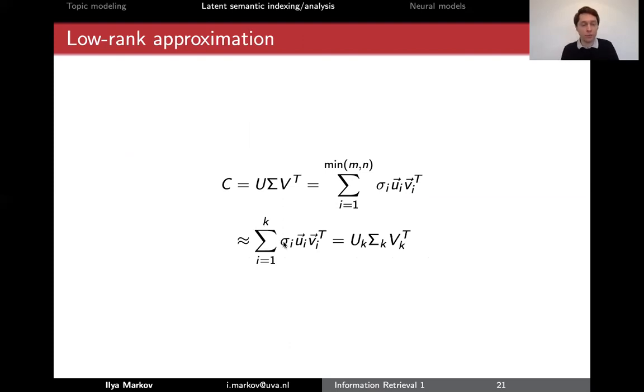Since most other singular values are very small, very close to zero, this will be roughly equal to this low rank approximation, which we write down as these matrices. So these matrices are much smaller. These matrices, for example, it has K elements on the diagonal.